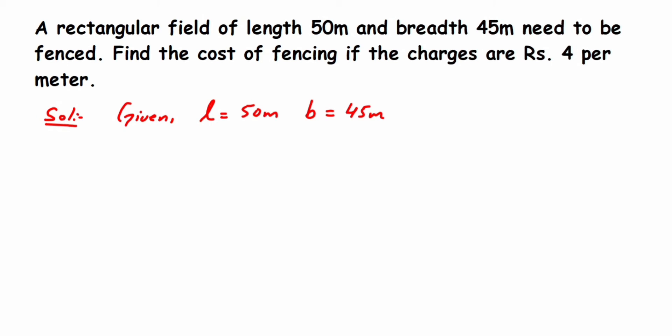So I'm going to find out the perimeter of the rectangular field. The perimeter of a rectangular field will be equal to—the formula is 2(l+b). We're going to substitute here.